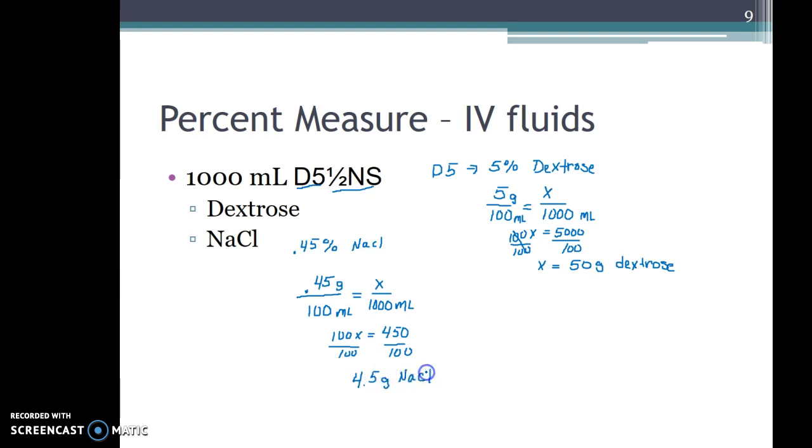So in this particular IV there are 50 grams of dextrose, that's the sugar. There are 4.5 grams of salt, that's that half normal saline and there would be 1000 mL of water because with our IV fluids we expect these to dissolve and so we're going to use the full amount of water.